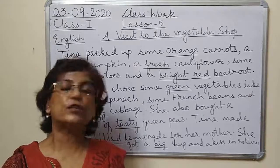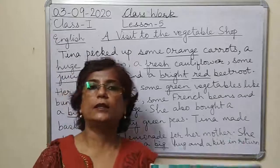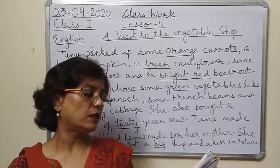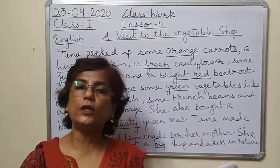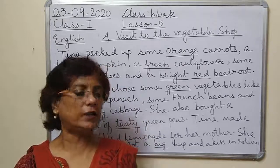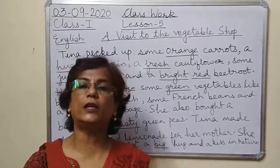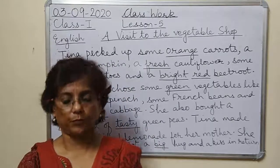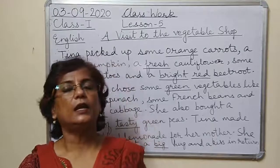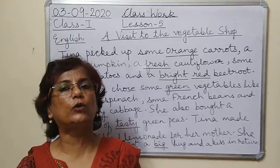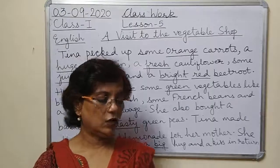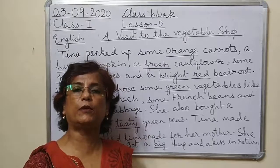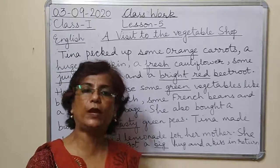How was the cabbage? It was big and leafy. Then tasty green peas — how were the green peas? They were tasty. Chilled lemonade — how was the lemonade? It was absolutely chilled. So all these words tell us something more about the naming words.